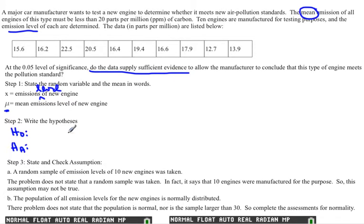H₀ is what we assume to be true. So let's see what we're trying to prove or show. The mean emission level of all engines of this type must be less than 20 parts per million. So that tells me right there that less than tells me that we're trying to see if the mean emission level is less than 20 parts per million. Our H₀ looks exactly the same as the Hₐ except it has an equal sign in it instead of the inequality.